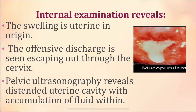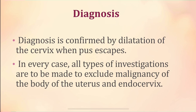Pelvic ultrasonography will reveal the distended uterine cavity and accumulation of fluid within the cavity. The diagnosis can be confirmed by dilatation of the cervix. Once the cervix is dilated, the mucopurulent blood-stained offensive intermittent discharge can be seen escaping out through the cervical os. In every case, all types of investigations are to be performed to exclude malignancy of the uterus and endocervix.